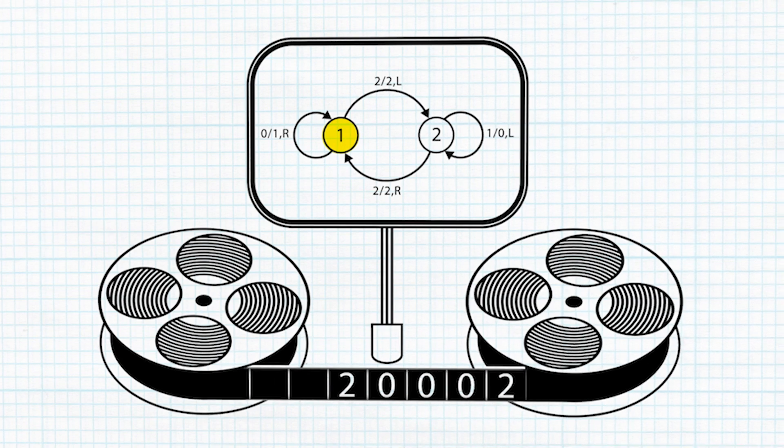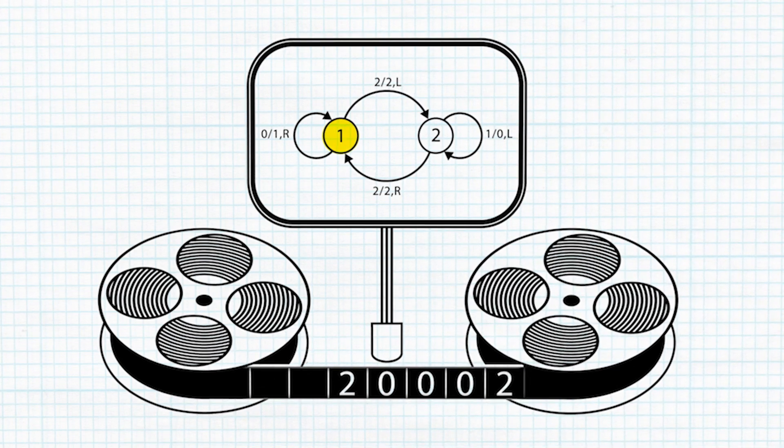Now here's the astounding magical part. No matter what program you are running, a Turing machine just executes the same exact procedure over and over at the basic level. First, the Turing machine reads the symbol on the playhead — the playhead reads a zero in this case. Next, it follows the diagram.